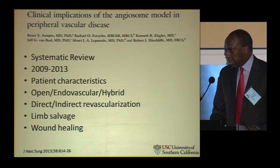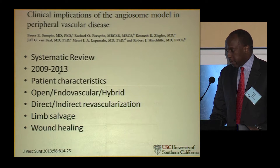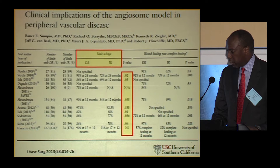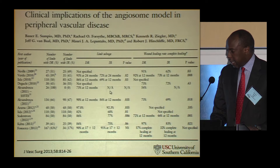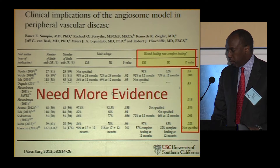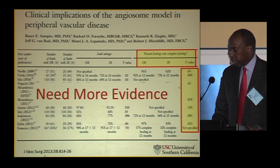Dr. Bauer out of Yale did a systematic review of all papers from 2009 to 2013. For limb salvage and wound healing the results were pretty much all over the place. Dr. Bauer ended his report by saying, we need more evidence — we really don't know what to do. This was in 2013.